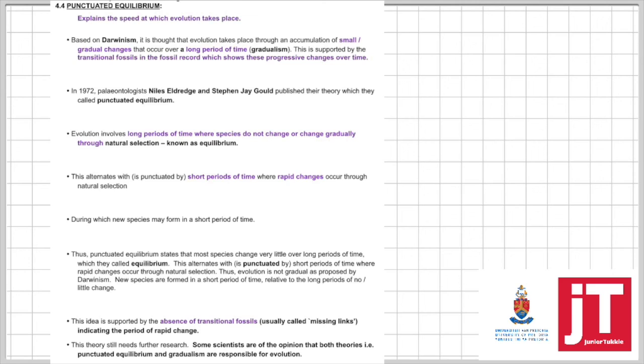In 1972, Niles Eldridge and Stephen Jay Gould said the species remains outwardly the same for long periods of time. That's known as an equilibrium. This alternates with short periods of time where there's rapid changes through natural selection. They used the absence of transitional fossils, whereas Darwin used presence of transitional fossils.